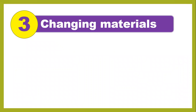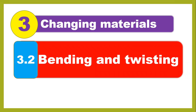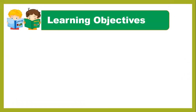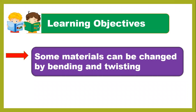As you know, we are in unit number three: Changing Materials. In unit 3, we discussed different materials and how we can change them into different shapes. In this lesson, you are going to learn and discuss how some materials can be changed by bending and twisting.